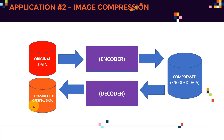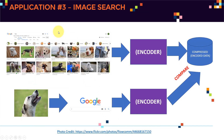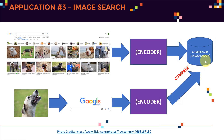The third application, which is also quite well known, is image search. For example, in Google image search, when you search for images of dogs, all those images are encoded by passing them through an encoder, producing a compressed encoded version of the data — essentially a matrix or array representing all those images.